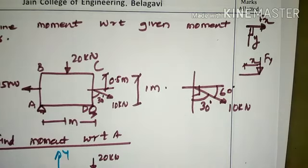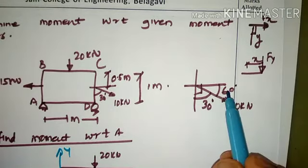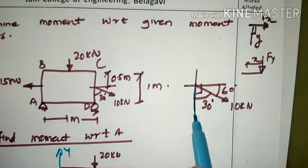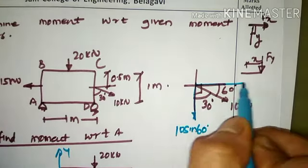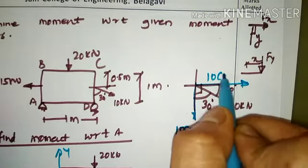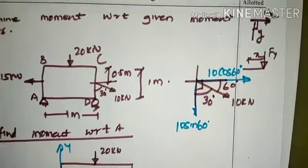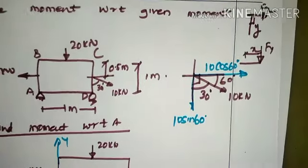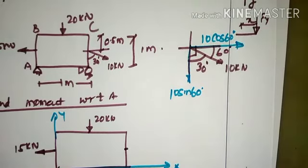The resolution of the 10 kN force at 60 degrees gives a vertical force component of 10 sin 60 and a horizontal force component of 10 cos 60. These are the two components parallel to the y-direction and x-direction respectively. Resolving forces this way makes perpendicular distance multiplication straightforward.